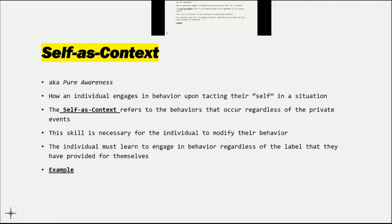From here we can move on to the next process: Self-as-Context, also known as pure awareness. This refers to how an individual engages in behaviors upon tackling themselves in a situation. With self-as-context, it's referring to these behaviors that occur regardless of private events. What we're doing here is altering one's dimension of the self that can then further function or alter the motivation to engage in certain behaviors — for example, to evoke more appropriate behavior or to abate more inappropriate behavior.